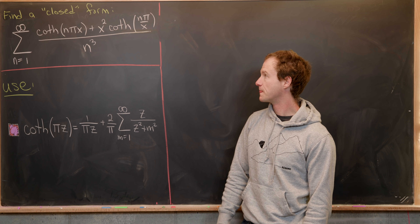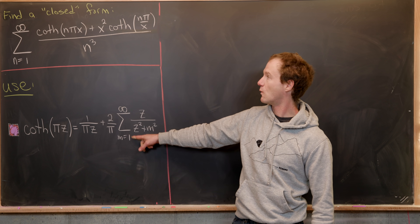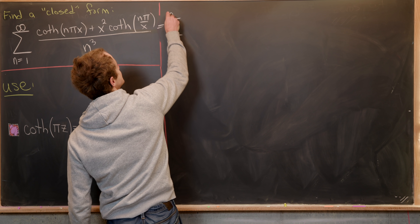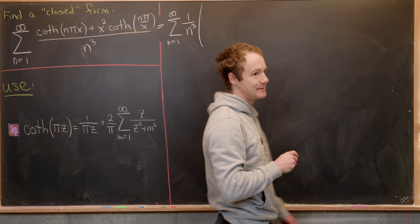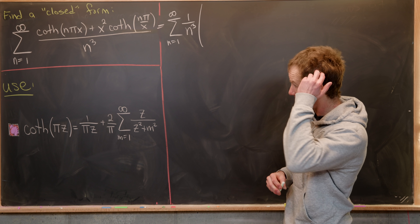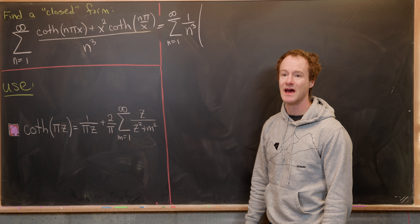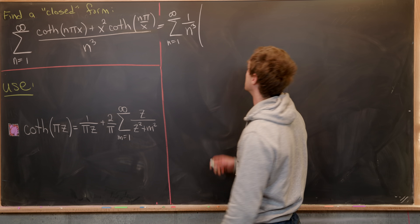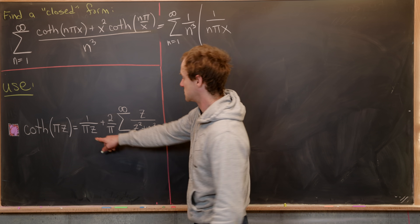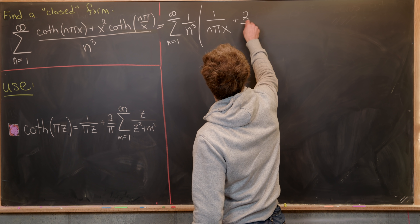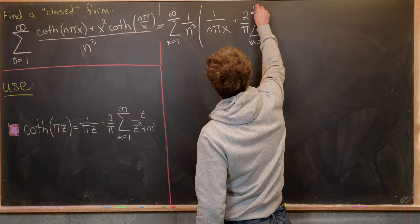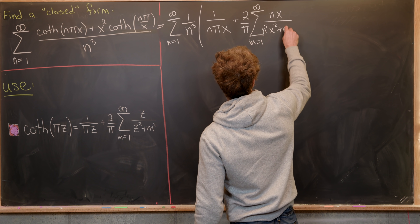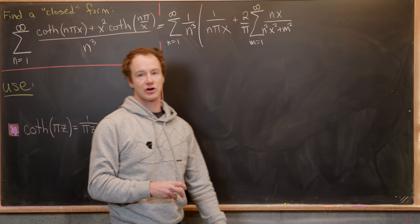Now we're ready for our main goal. We insert the hyperbolic cotangent in this form into the sum, creating a double sum. We have the sum as n from 1 to infinity of 1/n³ times the expanded expression. For the first term coth(n*pi*x), substituting z = n*x gives: 1 over n*pi*x, plus 2 over pi times the sum as m from 1 to infinity of n*x over (n²*x² + m²).